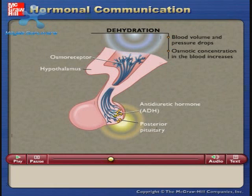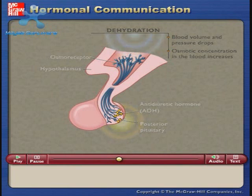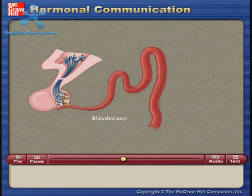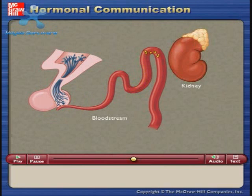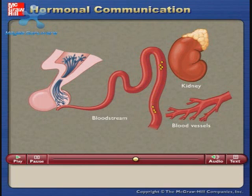The next step is to transport the hormone molecules to target cells. This is typically done via the bloodstream. Here, ADH is transported through the bloodstream to the kidneys and blood vessels.